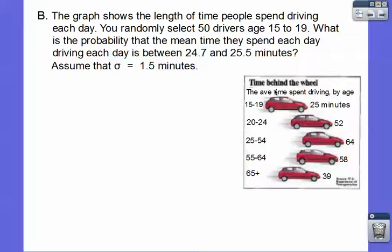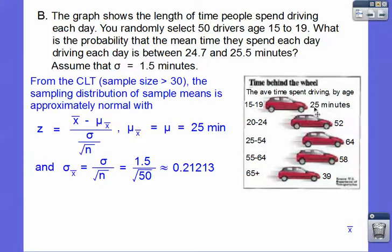We randomly select 50 drivers ages 15 to 19. What is the probability that the mean time they spend each day driving is between 24.7 and 25.5 minutes? We'll assume that σ = 1.5 minutes. This is n right here. And the mean for our 15 to 19 is 25 minutes right there.